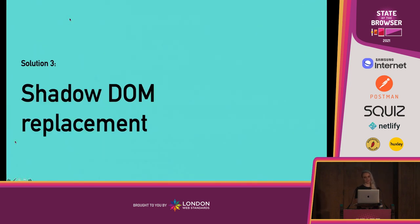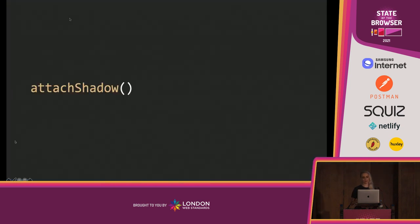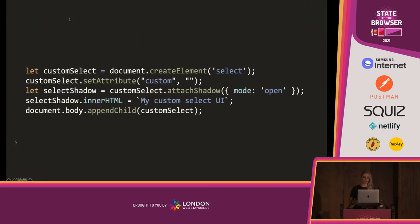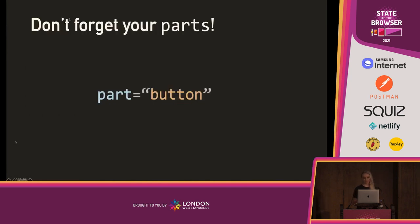Our third solution is shadow DOM replacement. Currently, calling attachShadow throws an exception — you can't call it on any form control. We're proposing removing this restriction when enabling customization for a given control. Calling attachShadow will result in the default user agent shadow DOM being swapped out with a new shadow root populated with content provided by the developer. Developers are still required to label the core parts of their shadow DOM using the part attribute; otherwise the shadow DOM will not be rendered. The platform won't attempt to guess at correct behavior or render an incomplete control implementation — just add your parts and let the platform do what it was meant to do.